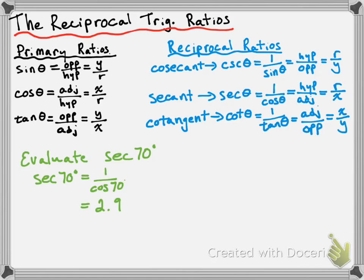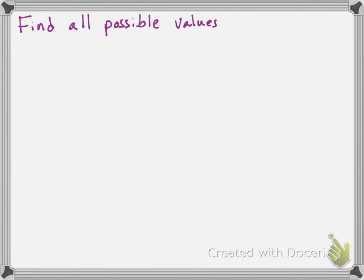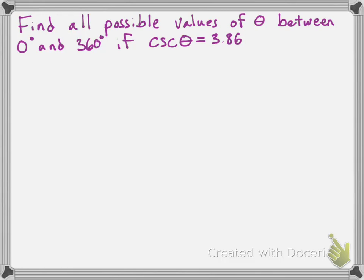Let's do another example. We're going to find all possible values of theta between 0 degrees and 360 degrees if the cosecant of theta is 3.86. We don't have a cosecant button on our calculator, nor a cosecant inverse. So we're going to use our primary trig ratios. We know cosecant is the reciprocal of sine, so instead of cosecant of theta, we write 1 over sine of theta equals 3.86.